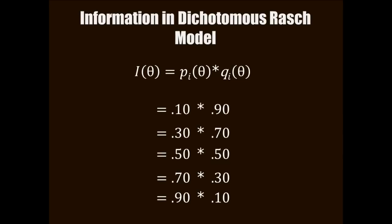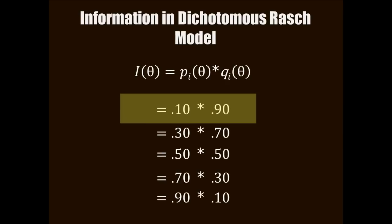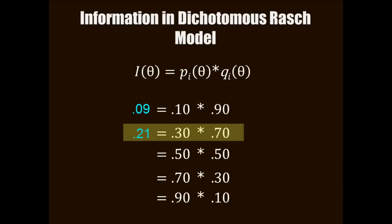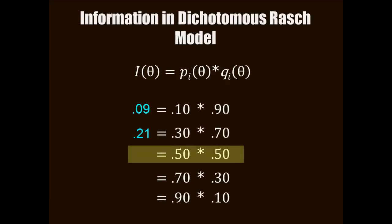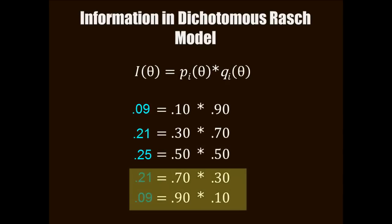Let's just do some of these calculations by hand. Suppose the probability of saying no was .10. That would make the probability of saying yes .90. If you multiply those together, you get an information value of .09. If the probability was .30 for no and .7 for yes, then you'd get .21. .21 would be your value of information. If the probabilities were .5 and .5, this would be the point of median probability. And the value of information at this point is .25. Then we figure these last two, and they are just like the first two with values of .21 and .09.